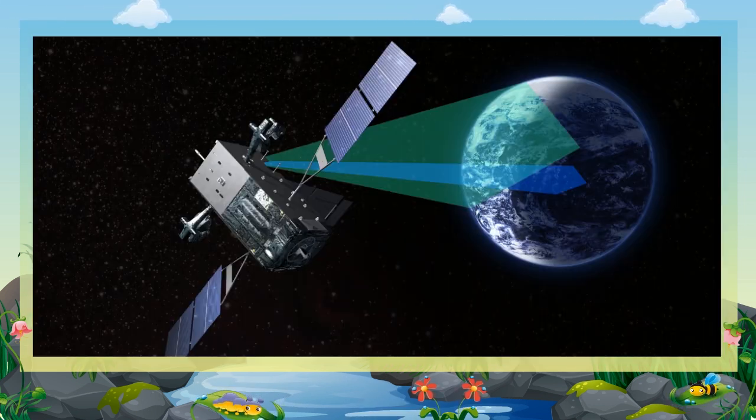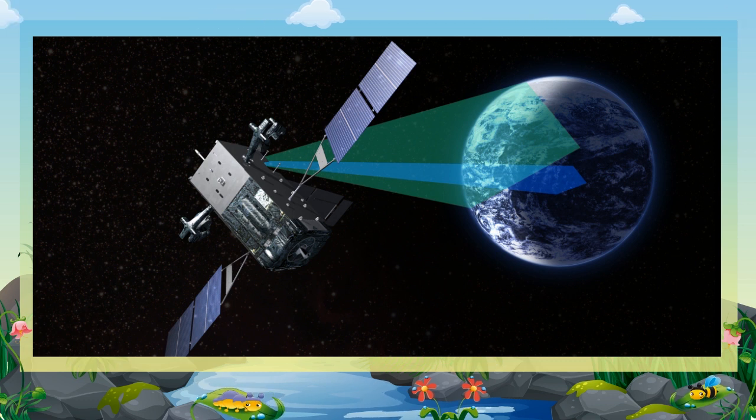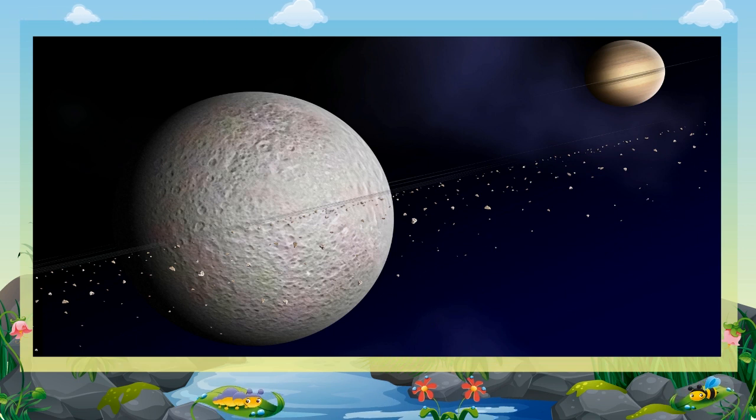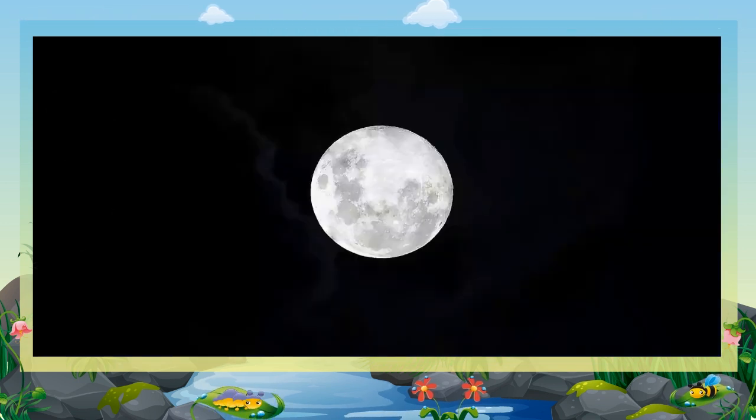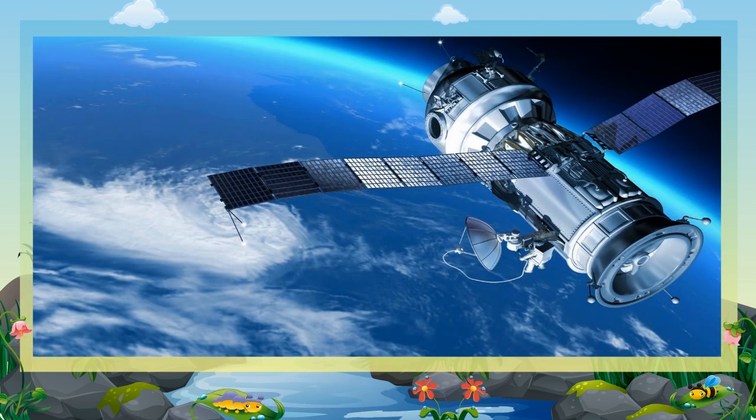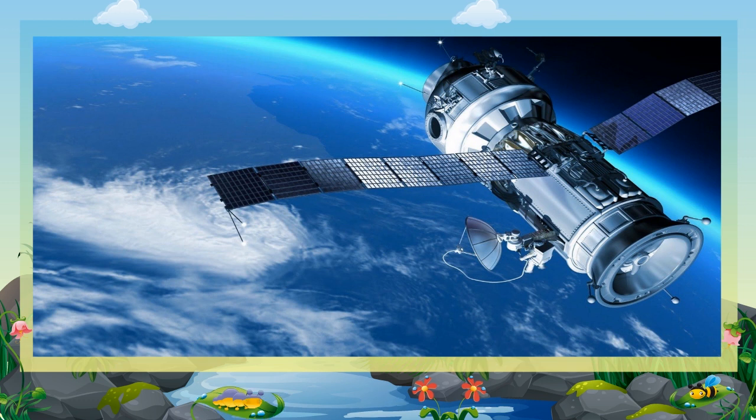Satellites. An object moving in a fixed orbit around a planet is called a satellite. Moon is a natural satellite of the Earth. It is the brightest object in the night sky. In the context of space flights, a satellite is an object which has been placed into orbit by human endeavor. Such objects are called artificial satellites.